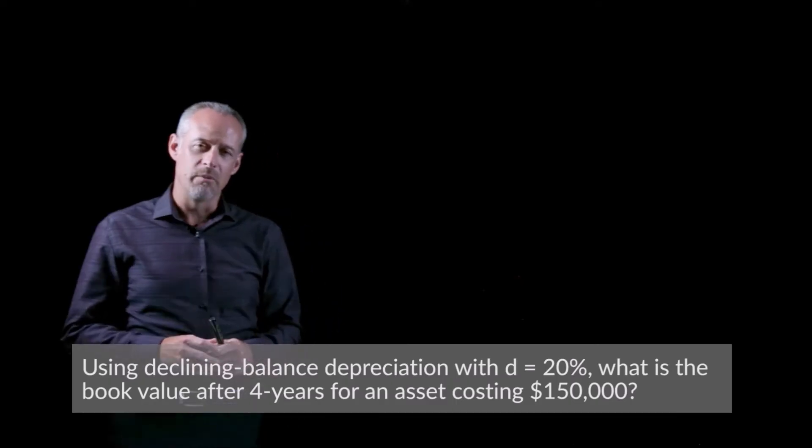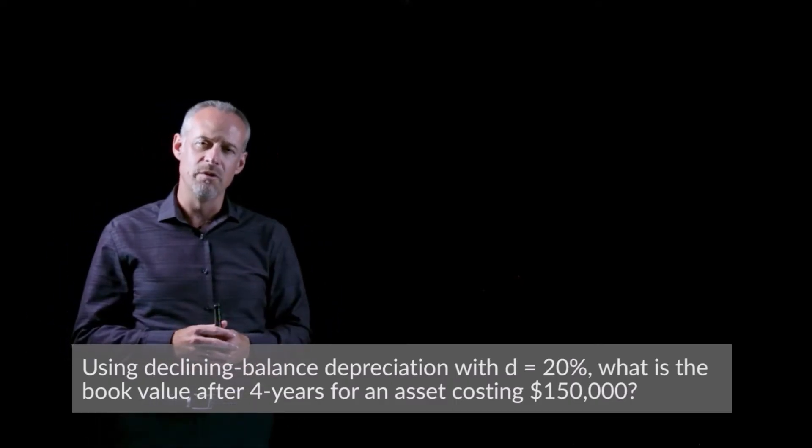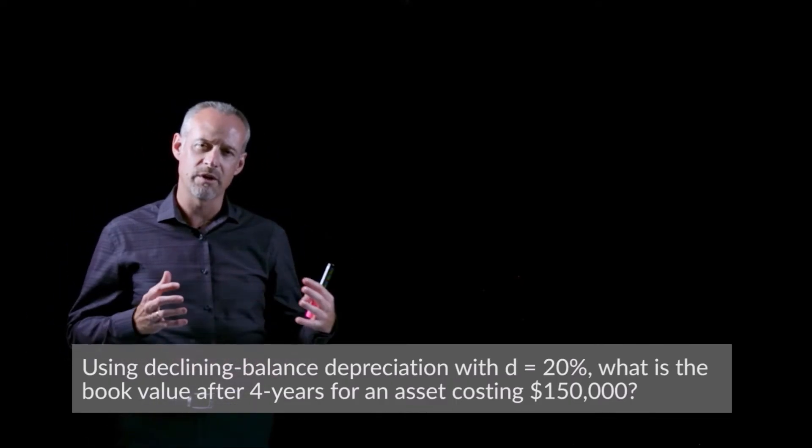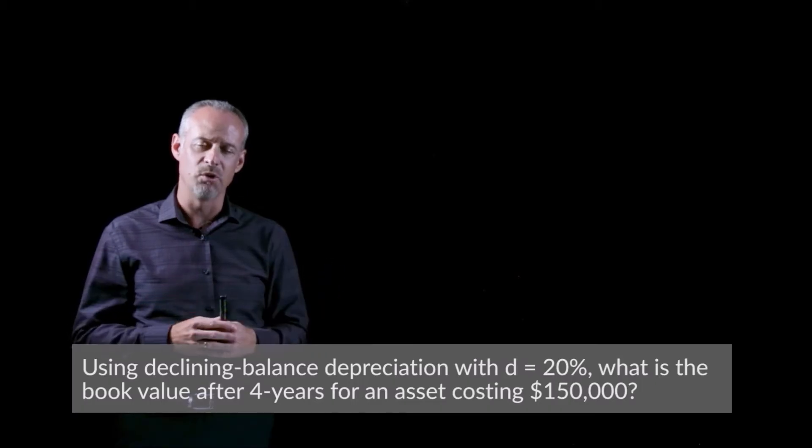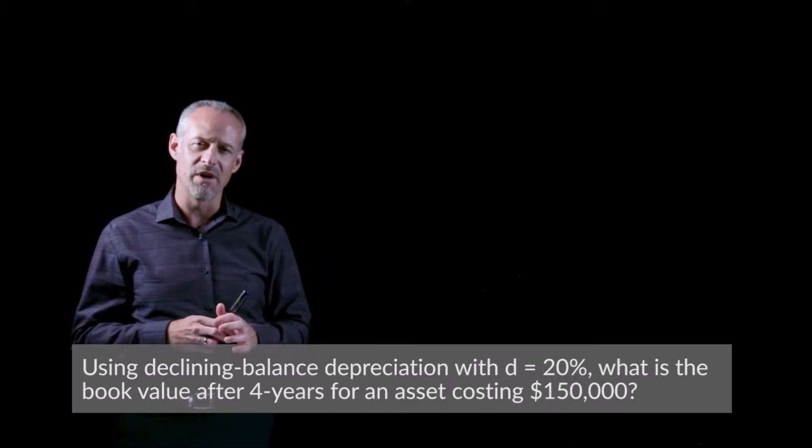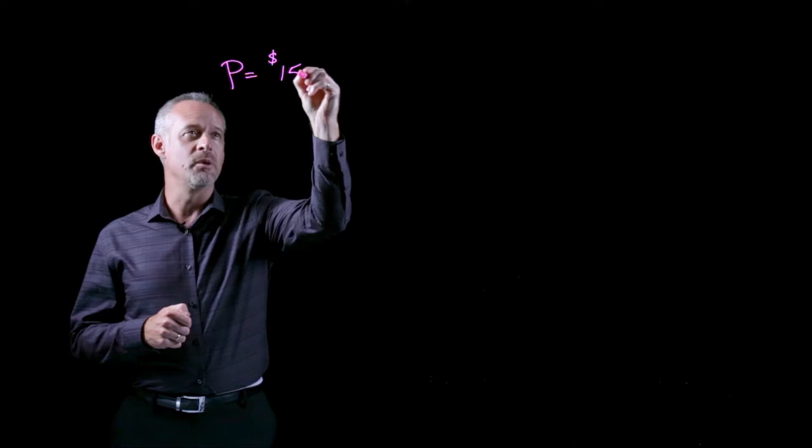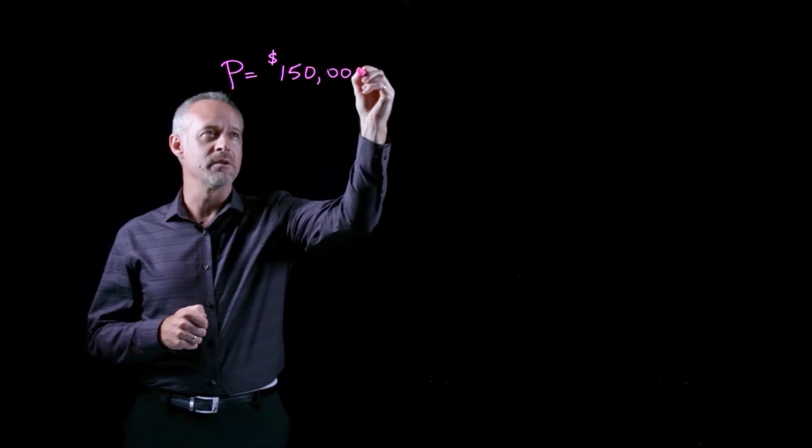So in this problem, there's some similarities to the problem where we looked at straight line depreciation, in that we have the same value of the asset initially. So our P, we read in the problem, is $150,000.